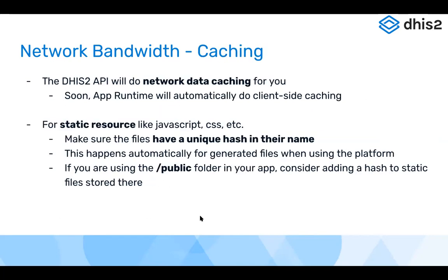That's all I'll say about caching for now — there's a lot more that could be said. Generally we're going to work on improving caching in the runtime, so soon it shouldn't be an issue to think about too much. For static resources, so long as you use the default ability to have a hash in the file name, and you add a hash to files in the public folder — or at least a specific enough name like the full version number — that's a good first step for avoiding cache misses.